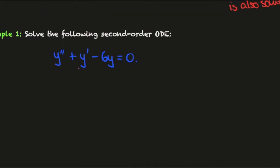Example 1: We have y double prime plus y prime minus 6y equals 0. We set y to be e to the lambda x. The derivative is lambda e to the lambda x, and the second derivative is lambda squared e to the lambda x.